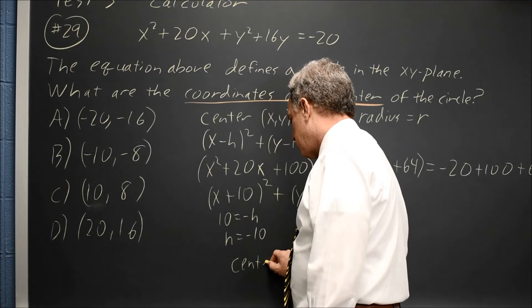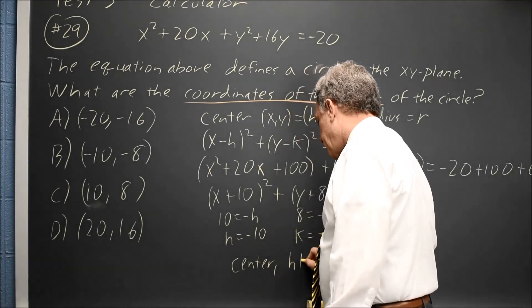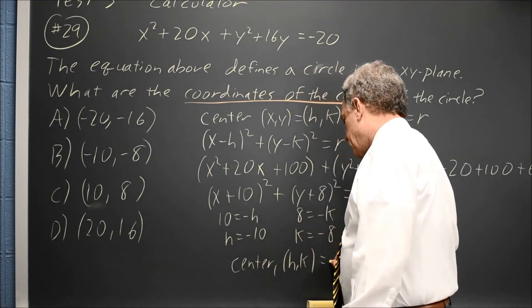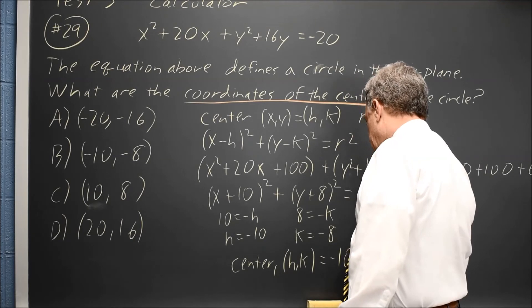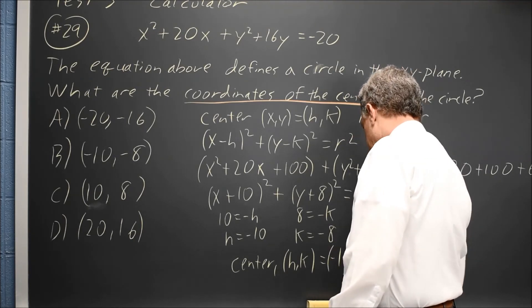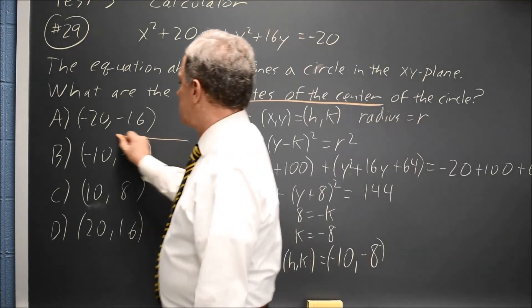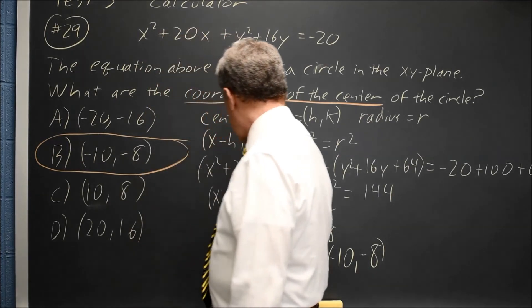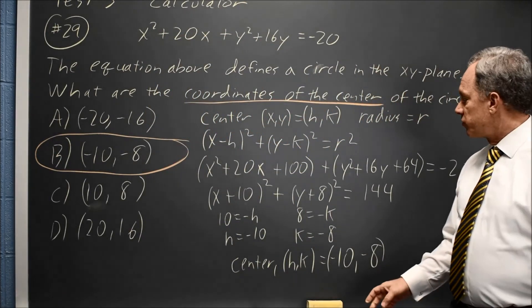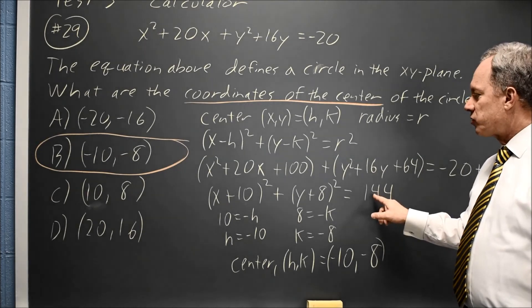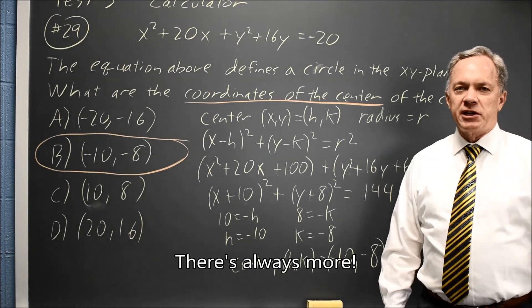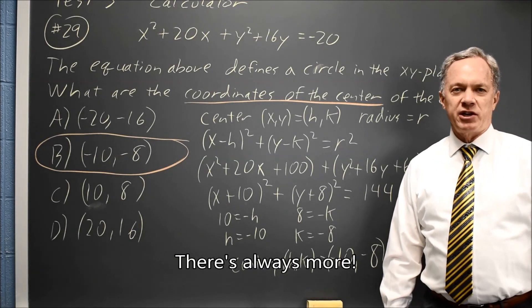So my center, which is (h,k), is (-10,-8), which would be choice B. I don't need to find the radius, although r² is 144, so we know that. Come back soon for our next SAT Math video.